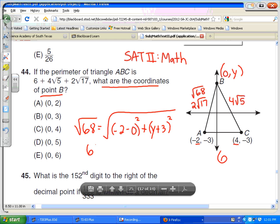So if we square both sides, 68 equals (-2)², that's 4, plus (y + 3)². If we subtract 4 from both sides, 64 equals (y + 3)². Taking the square root of both sides, we find that y + 3 equals plus or minus 8.